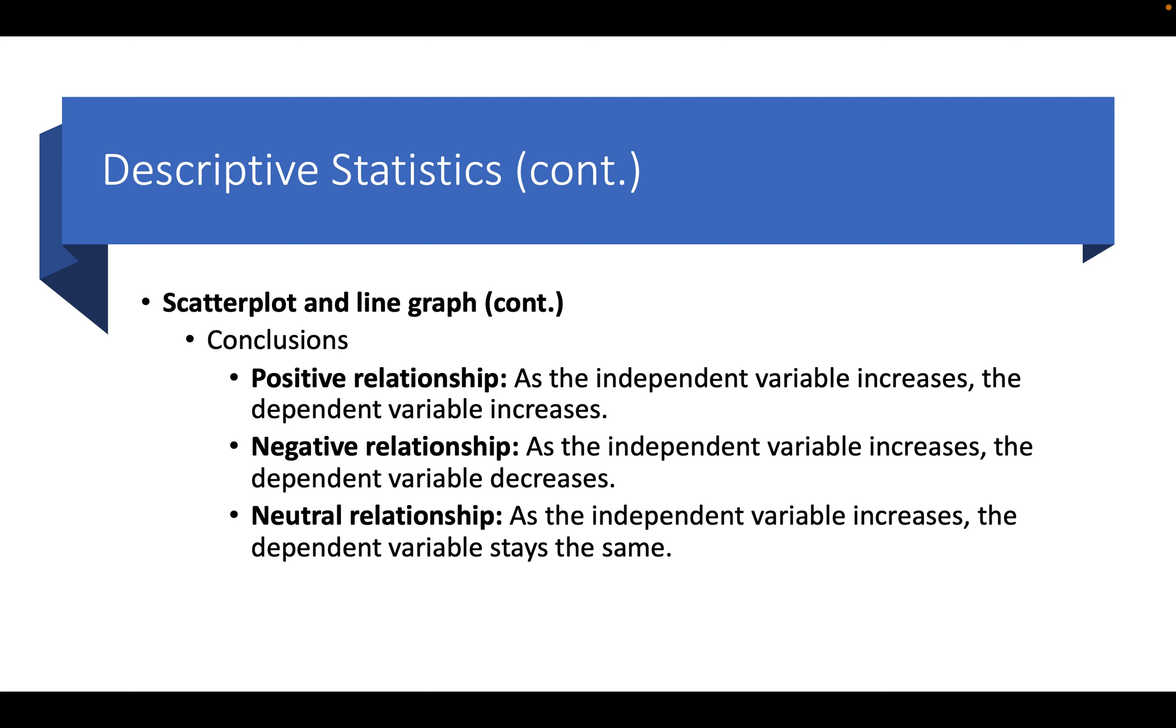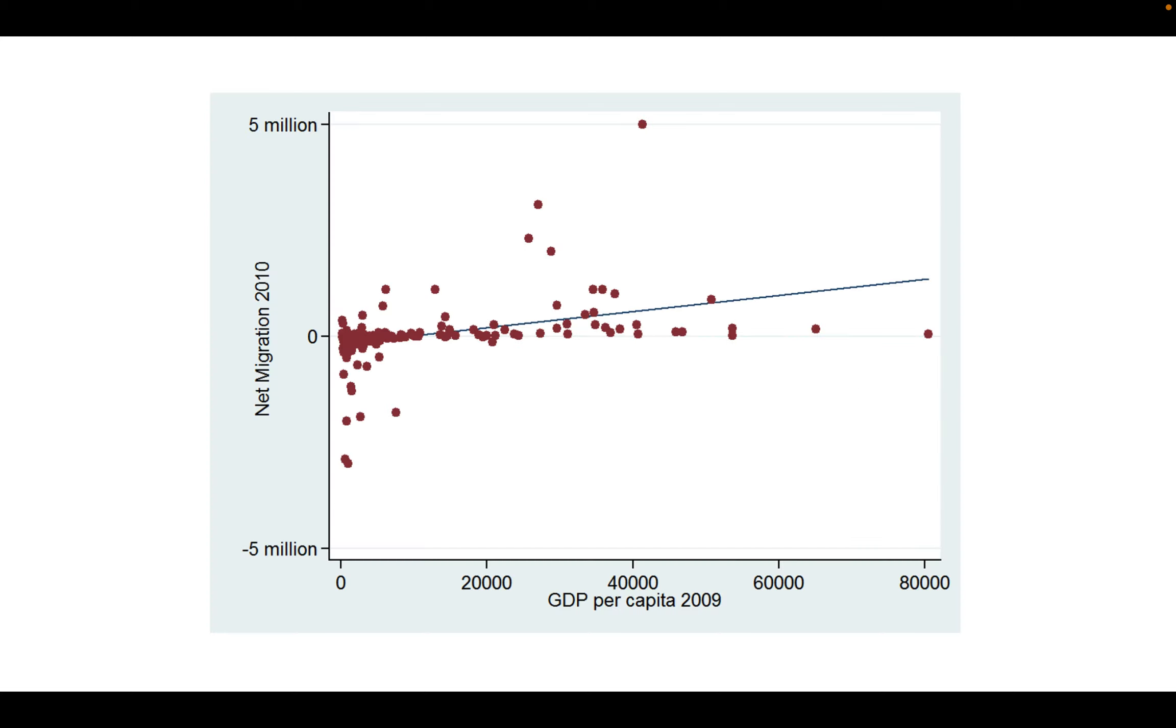We can make a few basic conclusions. We can note the overall tendency of the relationship by noting the slope of the line. And slopes are either positive, negative, or neutral.